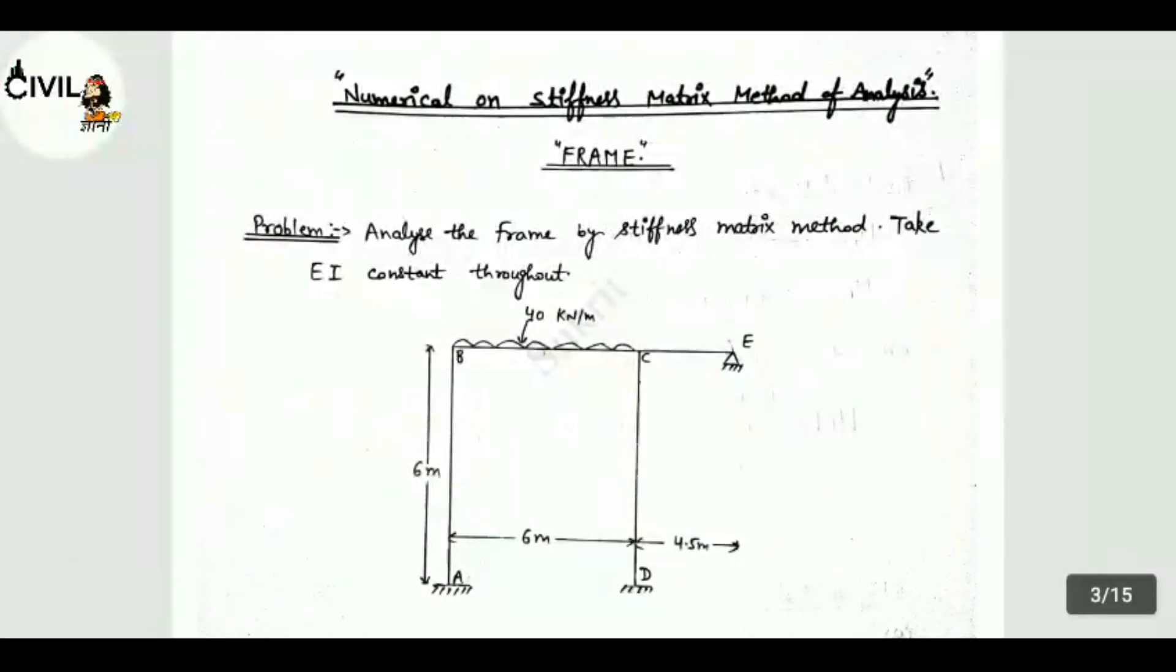See this is the numerical on stiffness matrix method of analysis, example of frame. See the problem: Analyze the frame by stiffness matrix method. Take EI constant throughout. This is a rigid frame given: A, B, C, D, E.